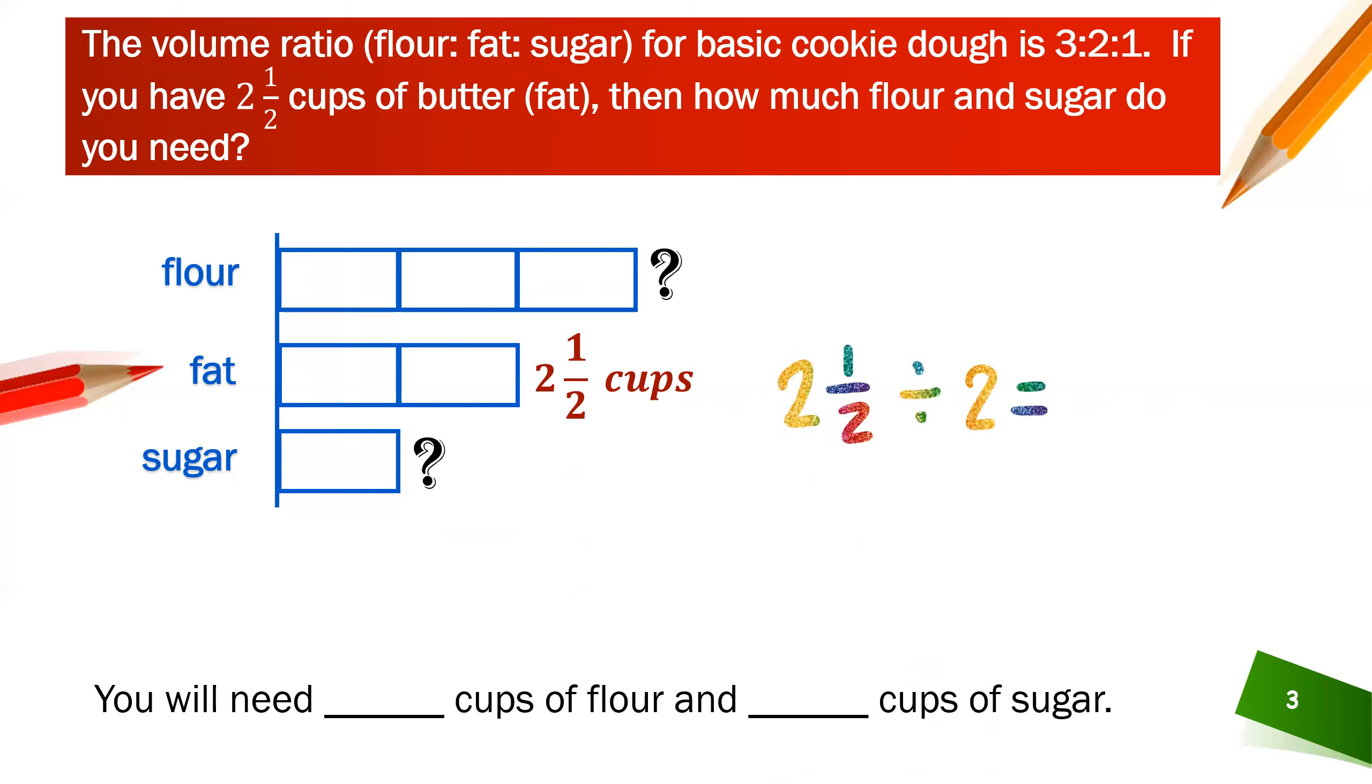Well two and a half cups divided by two. Two divided by two is one and one half divided by two is a quarter, so each one of these little unit right there in the fat is one and a quarter cup, which means that right there is one and a quarter cup of sugar and the flour would be three times one and a quarter cup. Therefore you will have three and three quarter cups of flour and one and a quarter cups of sugar in order to mix that with two and a half cups of butter to make those cookies.